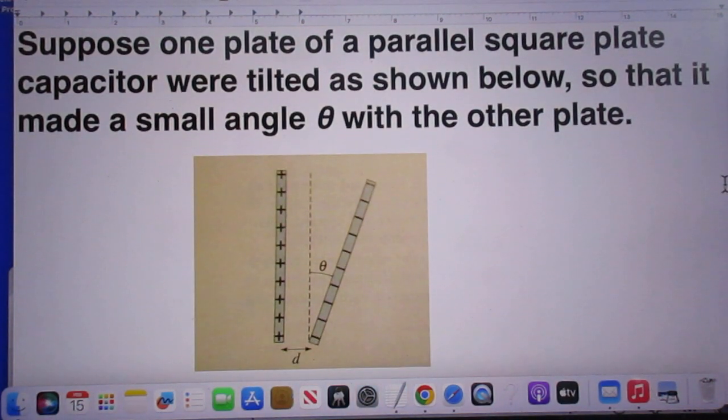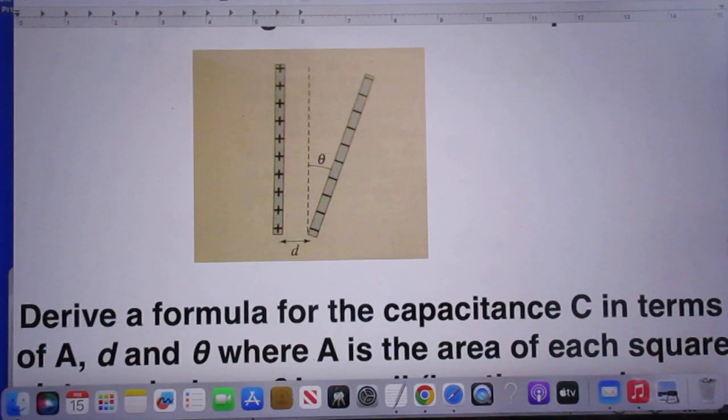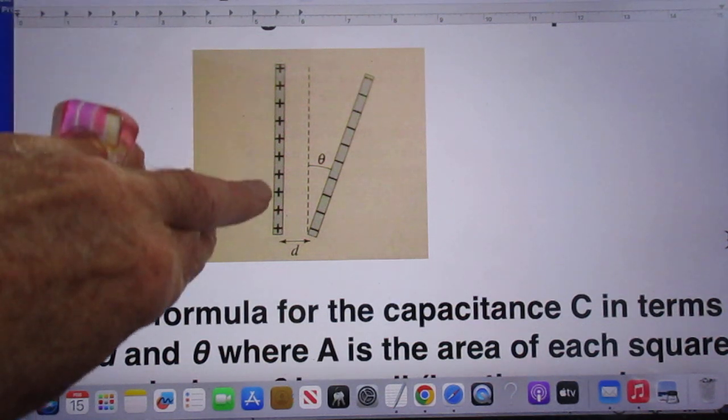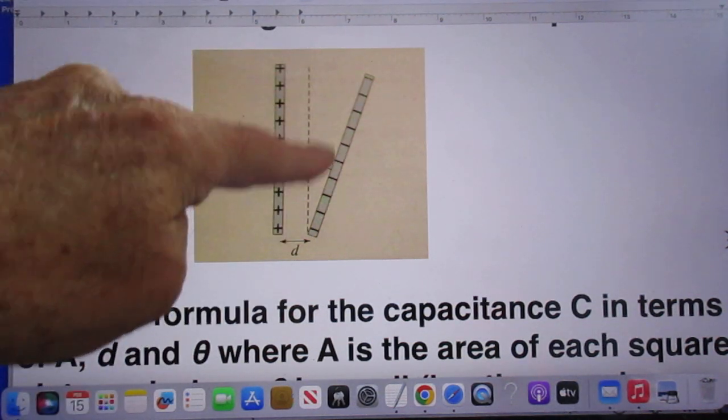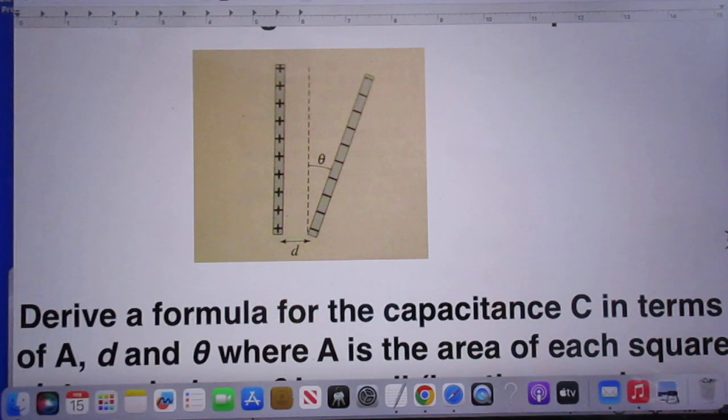Suppose one plate of a parallel square plate capacitor were tilted as shown below, so that it made a small angle theta with the other plate. So take a look. Here you see the two plates, the angle theta, and they are separated here by a distance d.